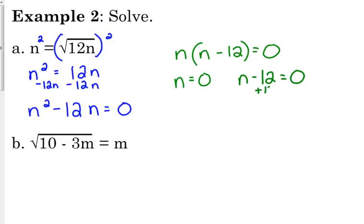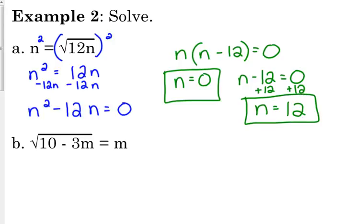Anytime we run into quadratics, sometimes both solutions work, sometimes one solution works, sometimes neither one of them work. We have to check it, especially when our quadratic is involved. So if we plug 0 back into the original, 0 is equal to the square root of 12 times 0. That's good. 12 times 0 is 0, square root of 0 is 0. That one checks out. 12 also works. 12 times 12 is 144. Square root of 144 is 12, so we're good for both of those. Both of those solutions work.